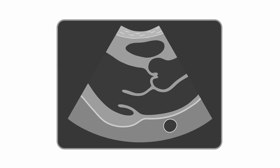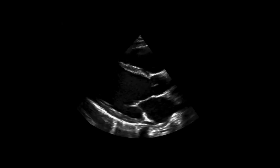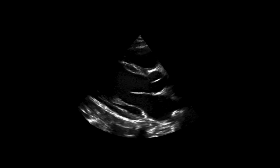In this view, the left atrium (LA), mitral valve (MV), left ventricle (LV), left ventricular outflow tract (LVOT), aortic valve (AV), interventricular septum, and right ventricle (RV) can be interrogated. 2D imaging is performed first.